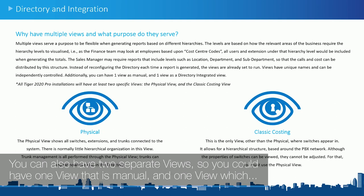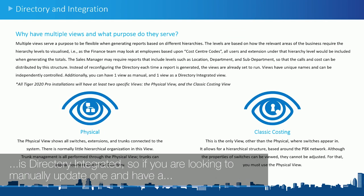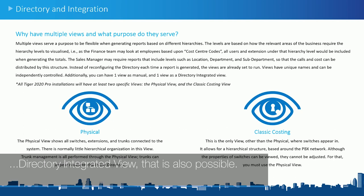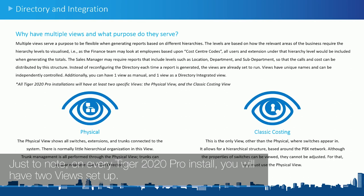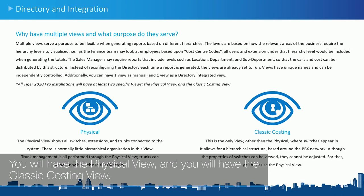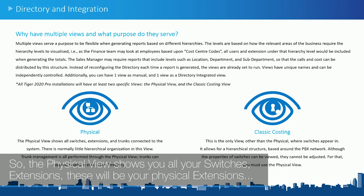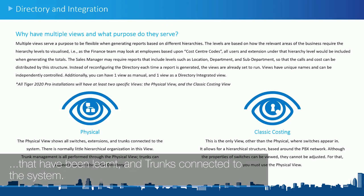You can also have two separate views — one that is manual and one which is directory integrated. So if you are looking to manually update one and have a directory integrated view, that is also possible. They will be completely independently controlled from each other. Just to note, on every Tiger 2020 Pro install, you have two views set up: the physical view and the classic costing view. The physical view shows you all your switches and extensions.